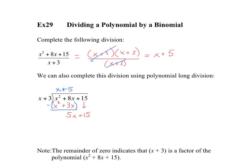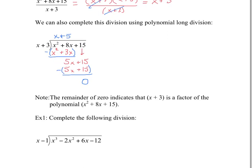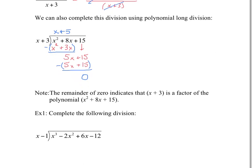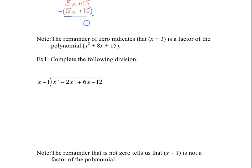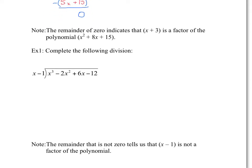We multiply 5 times x and 5 times 3 to get 5x plus 15, then subtract again. The remainder is 0, giving us the answer x plus 5, which matches exactly. The remainder of 0 indicates that x plus 3 is indeed a factor of this polynomial.